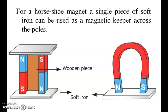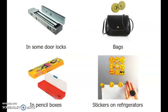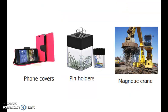Uses of magnets: magnets are found in some toys, some door locks, bags, pencil boxes, refrigerator stickers, phone covers, pin holders, and magnetic cranes. Magnetic cranes are used in industries. Magnets are also used in trains.